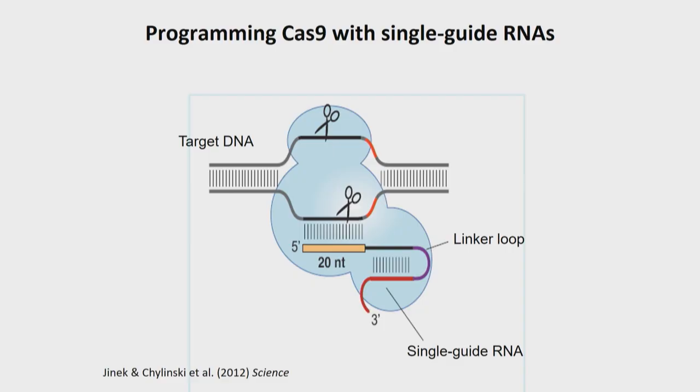In the laboratory, we realized this system could be simplified. By understanding the chemical details, Martin Jinek in my lab was able to combine those two separate RNA molecules into what we called a single guide RNA — containing the programming information on one end for recognition of DNA, and the handle for binding to Cas9 on the other end. As scientists working in the lab, we could change the sequence of RNA on one end to allow any DNA molecule to be recognized at a particular place in the sequence, enabling precise cutting by Cas9.